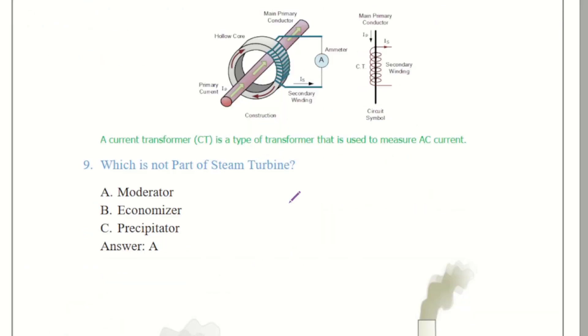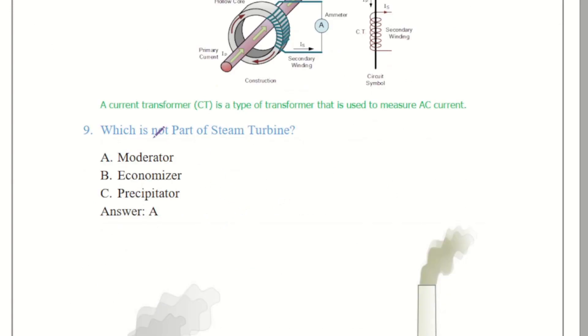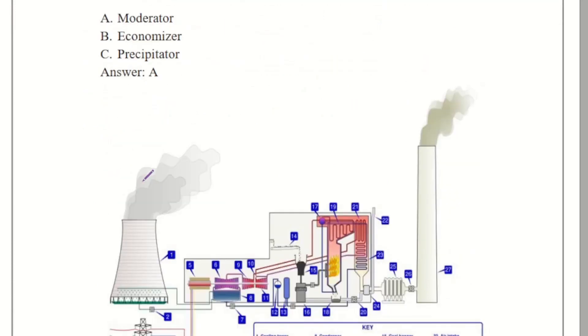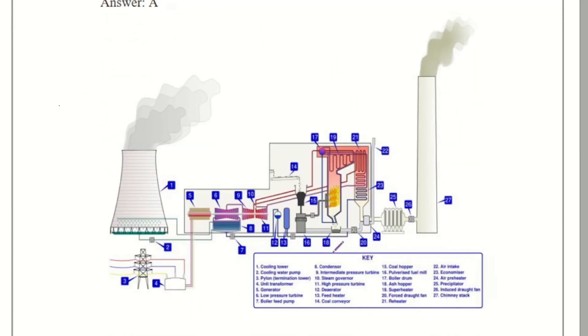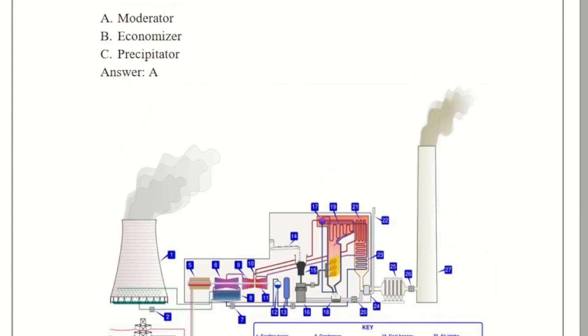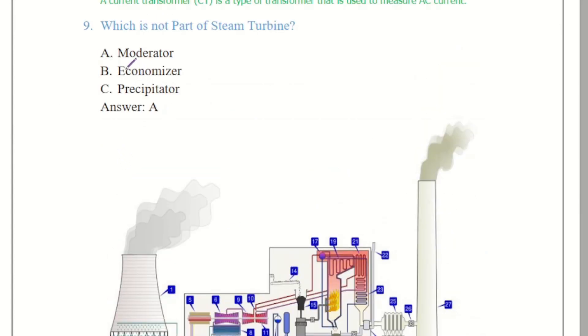The ninth question came for which is not part of steam turbine. So we have three different options over here. By the diagram we will be able to look over here the steam turbine that are the question at the type portion 25 and 23 represents here the two portion two options of the economizer and the precipitators are there. So obvious there will be not part of steam turbine is the option A.